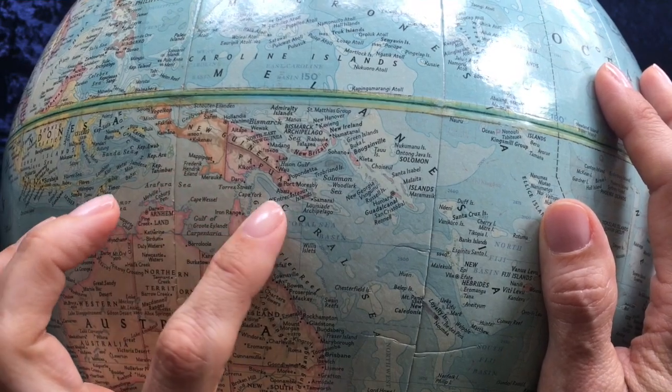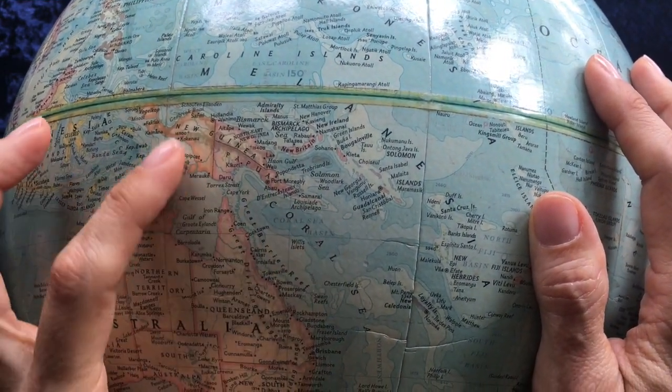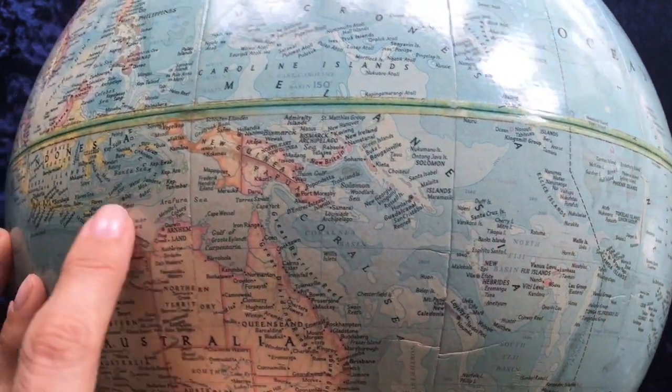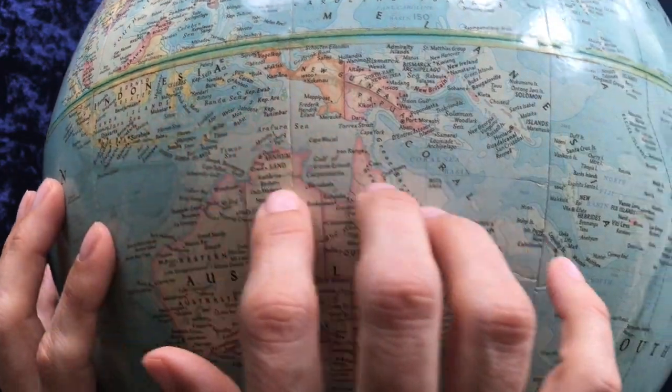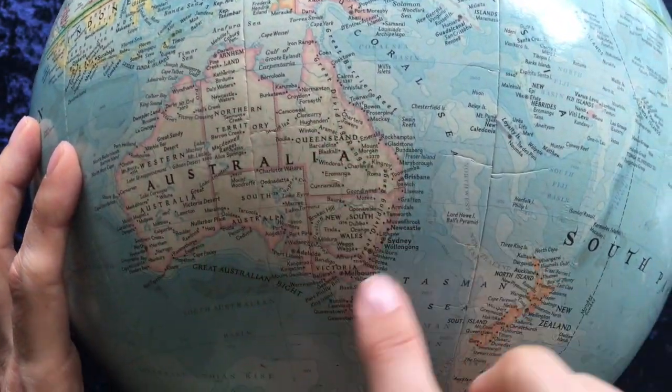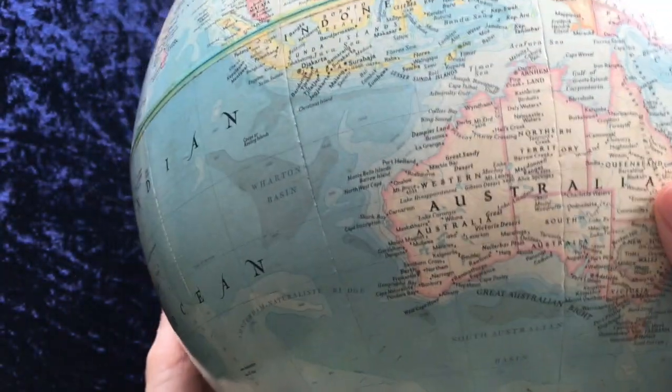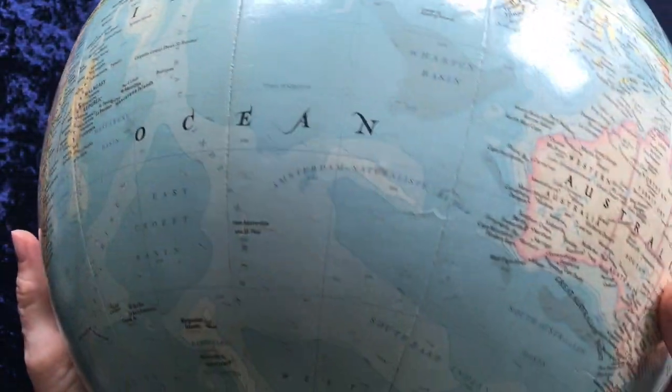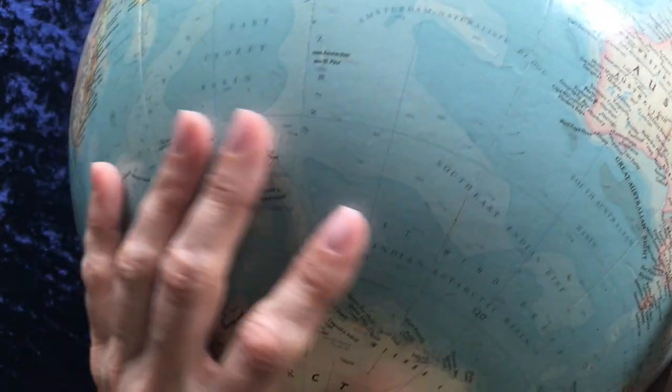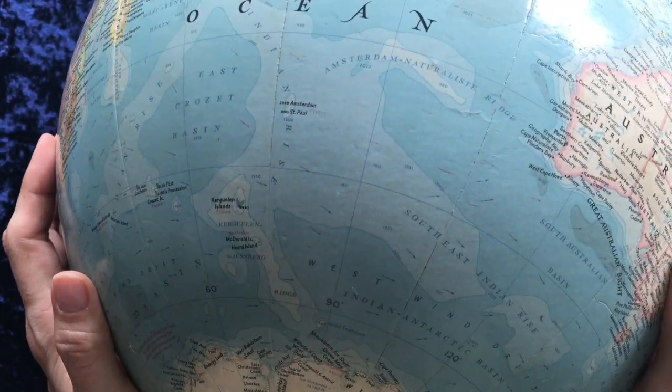Papua New Guinea, Indonesia, and Australia, and the vast Indian Ocean with some islands held by France and some by Britain.